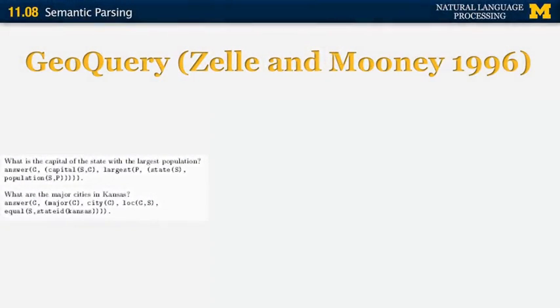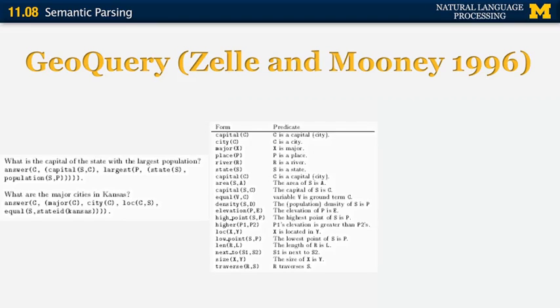After the NACL problem, we look at recent work on semantic parsing. The first is GeoQuery, one of the earliest semantic parsing systems by Zelle and Mooney from 1996, used to parse and semantically represent questions about geographical data. For example, it handled questions like 'What is the capital of the state with the largest population?' and 'What are the major cities in Kansas?' representing them in first-order logic, with predicates such as capital(S, C), major(X), and traverses(B, S).